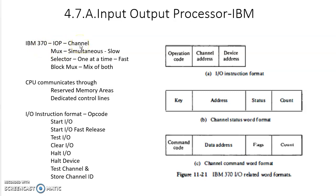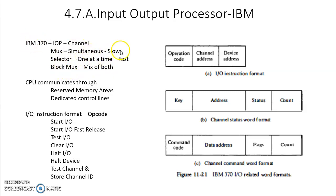IBM people call it a channel, so whenever we use the word channel, that means we are talking about an input-output processor. There are three types of channels: one is multiplexer, another one is selector, and another one is block multiplexer. The multiplexer channel is designed to work with slow to medium speed data transfer devices and can work with a number of devices simultaneously. The selector type channel is designed to work with faster data transfer devices and can work with one device at a time. The block multiplexer type channel is a mix of both — it can handle slower, medium, or fast data transfer rate I/O devices.